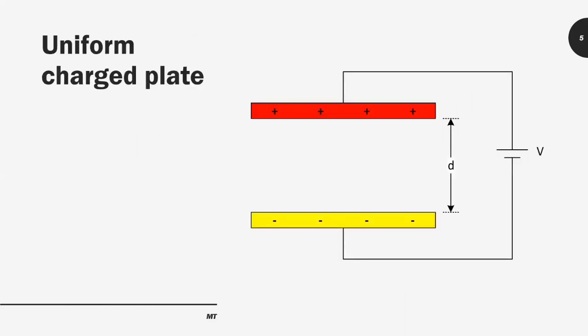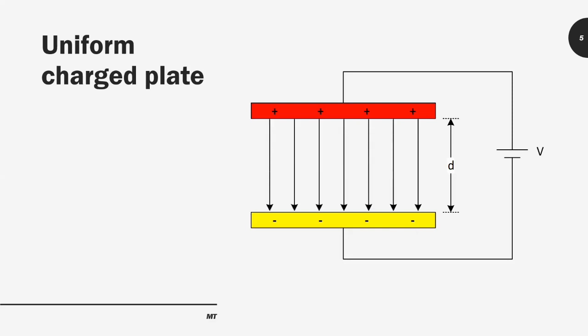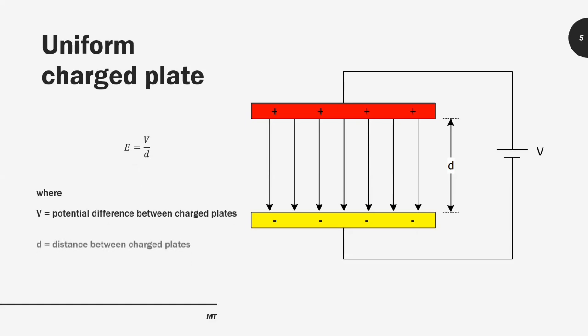Next is about the uniform charge plate. When you have two parallel plates connected to a voltage source, there will be a potential difference between the plates and there will be an electric field produced that flows from the positive plate to the negative plate. The electric field here is uniform and the value can be calculated using the formula E = V divided by D, where V is the potential difference between the charged plates and D is the distance between the plates. The unit of E here is volt per meter.